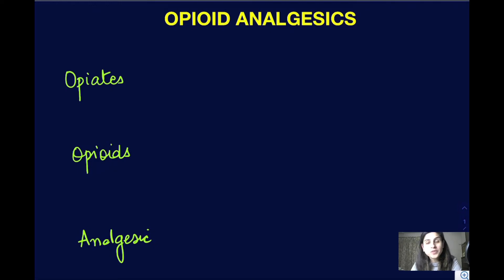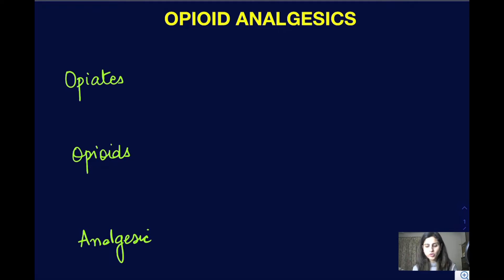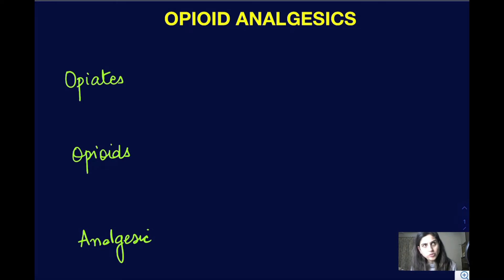We're going to start with a new topic in this lecture: opioid analgesics. These are very important from an examination point of view and they are very strong analgesics. We'll look at what they are, where they are used, and how they produce their effect. First, let's go over a few important terms.